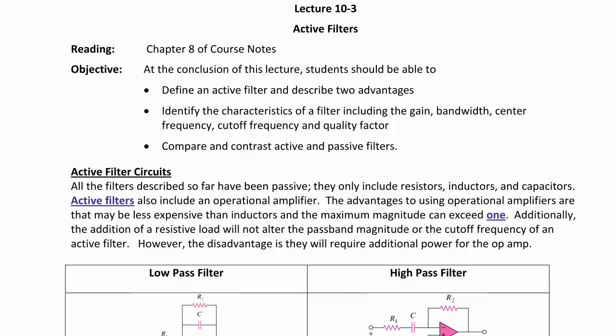Active filters can be described the same way we describe passive filters, except they include more than just resistors, inductors, and capacitors. Active filters also include an operational amplifier. The advantages to using operational amplifiers are that they may be less expensive than inductors, the maximum magnitude can now exceed one, and the addition of a resistive load will not alter the passband magnitude or the cutoff frequency of an active filter, because they have a very high input impedance.